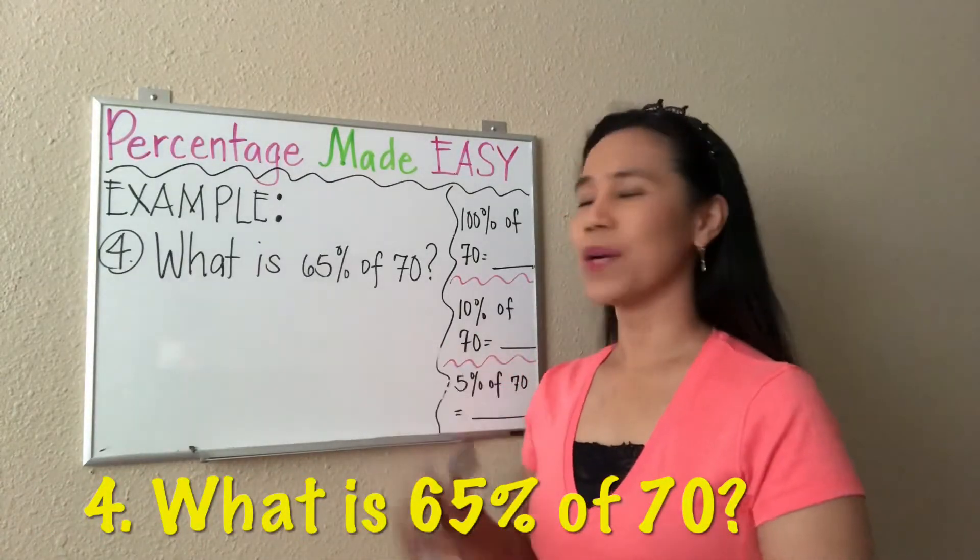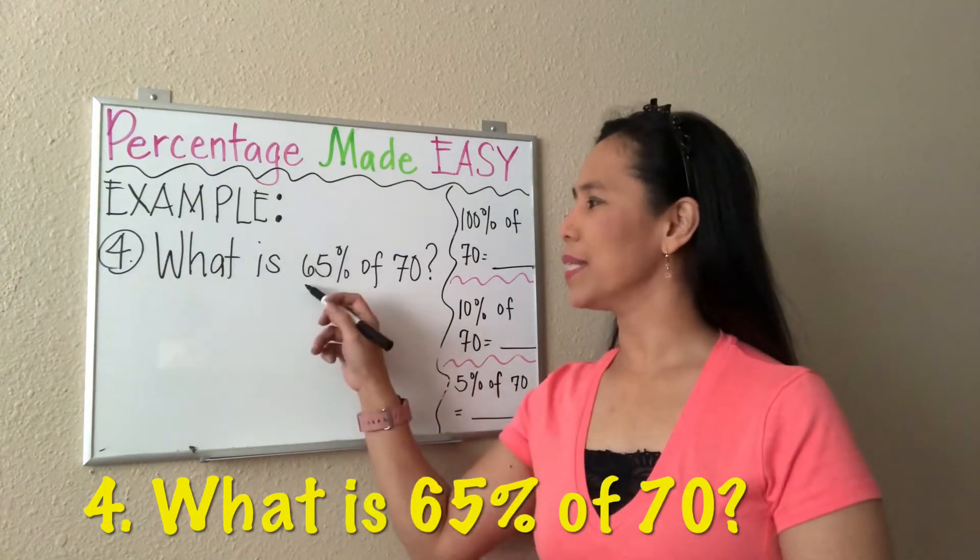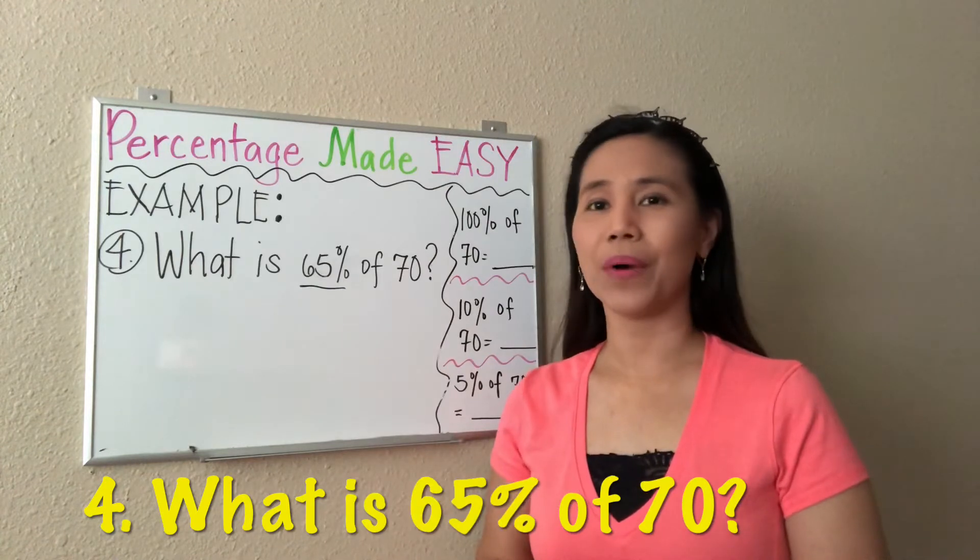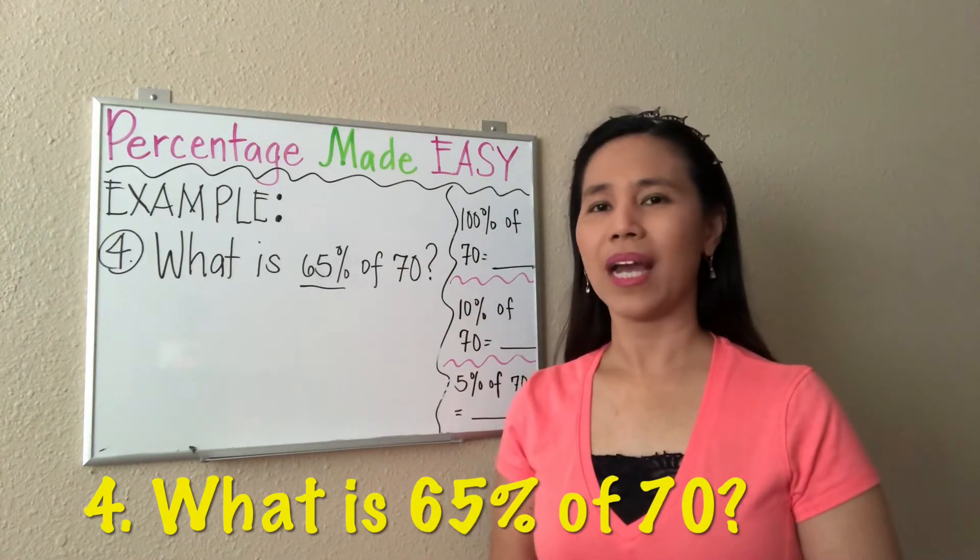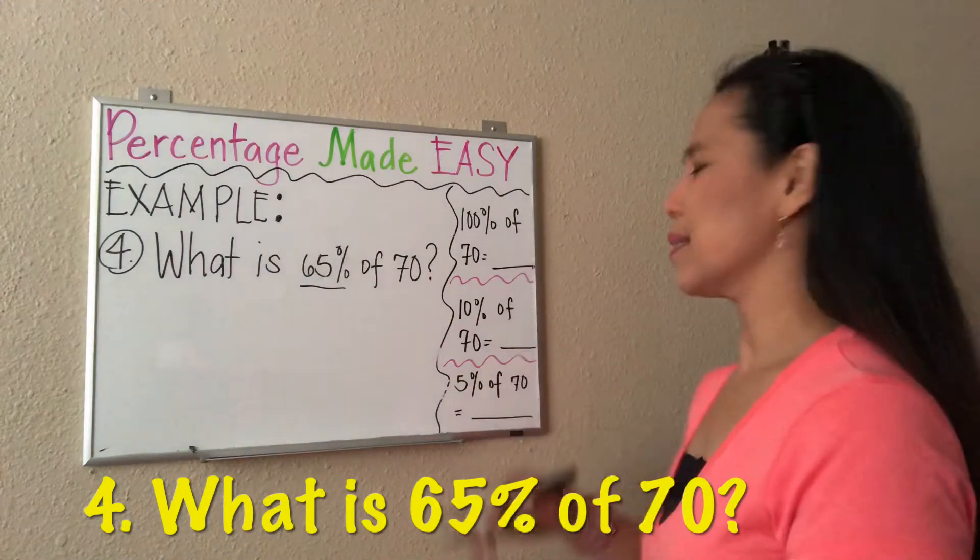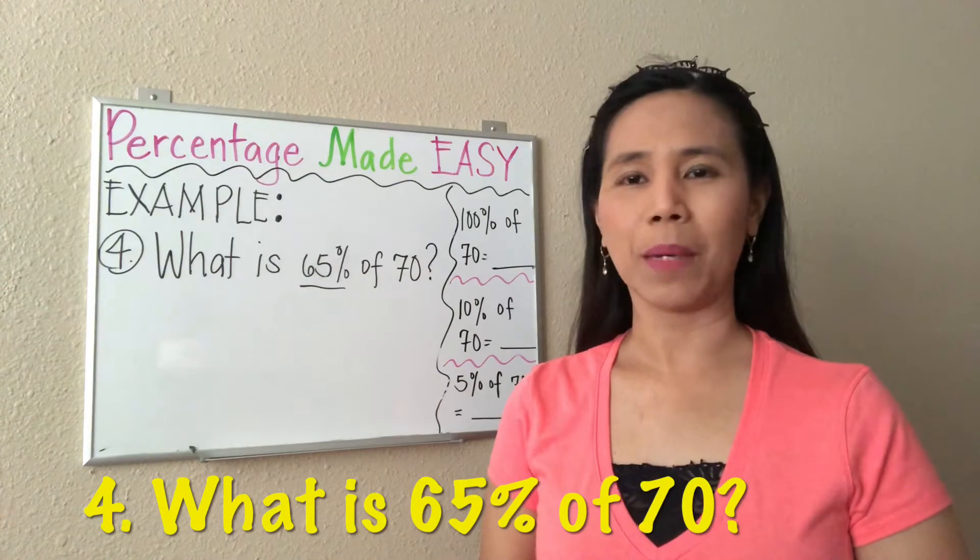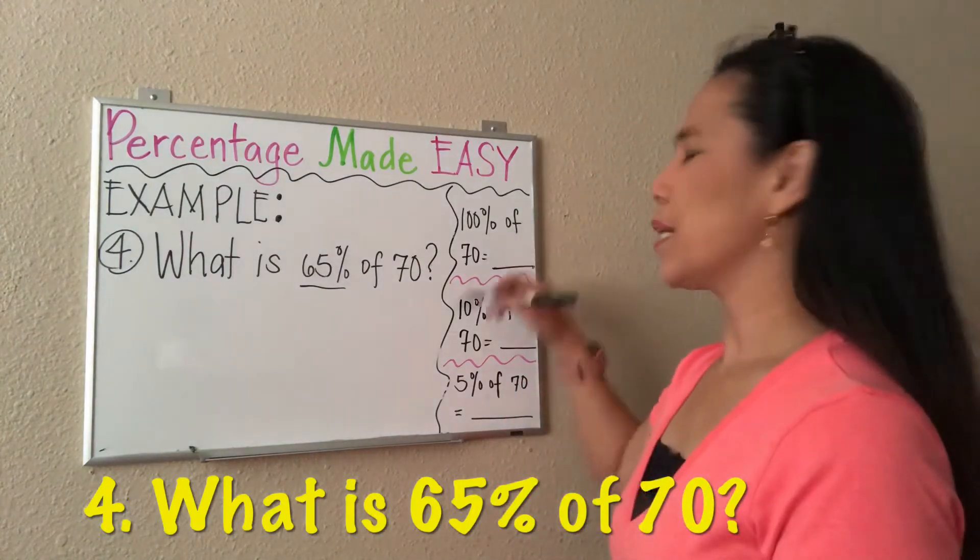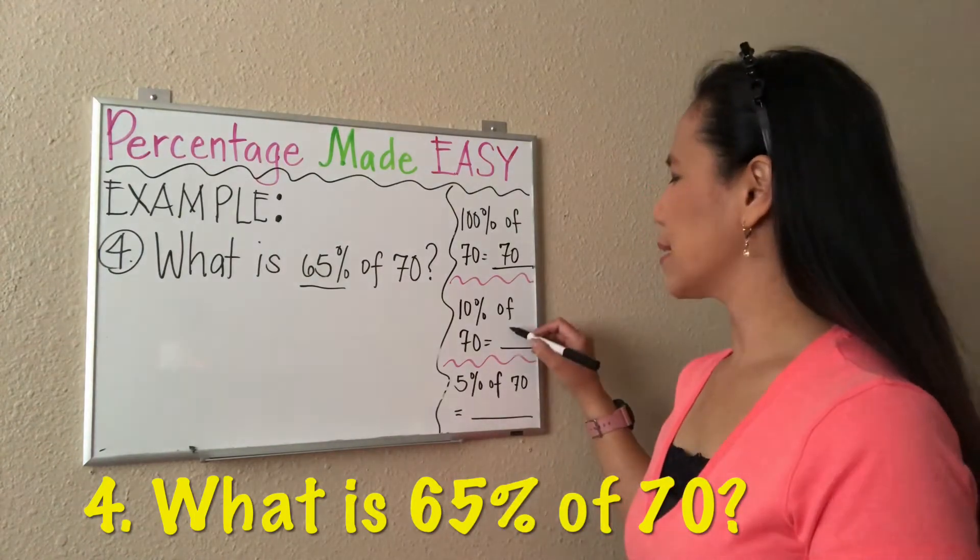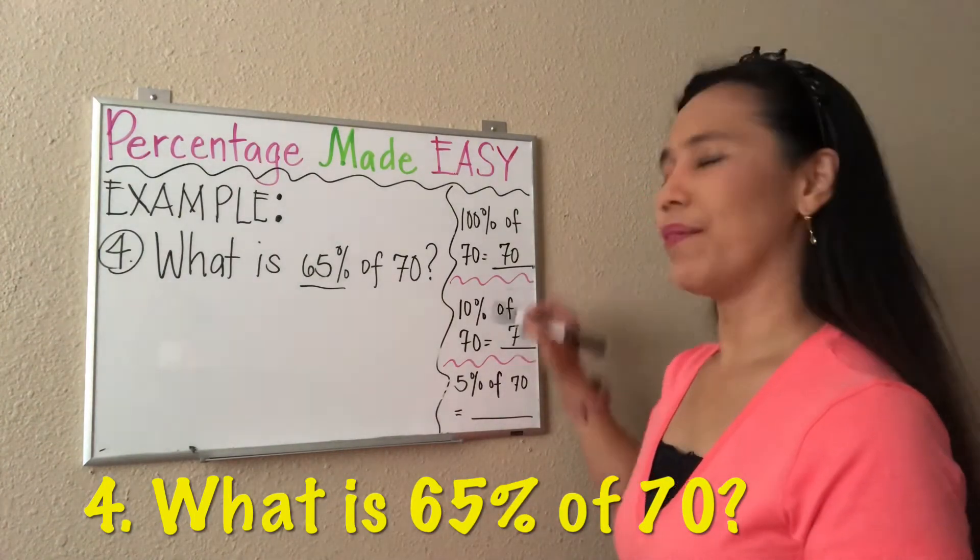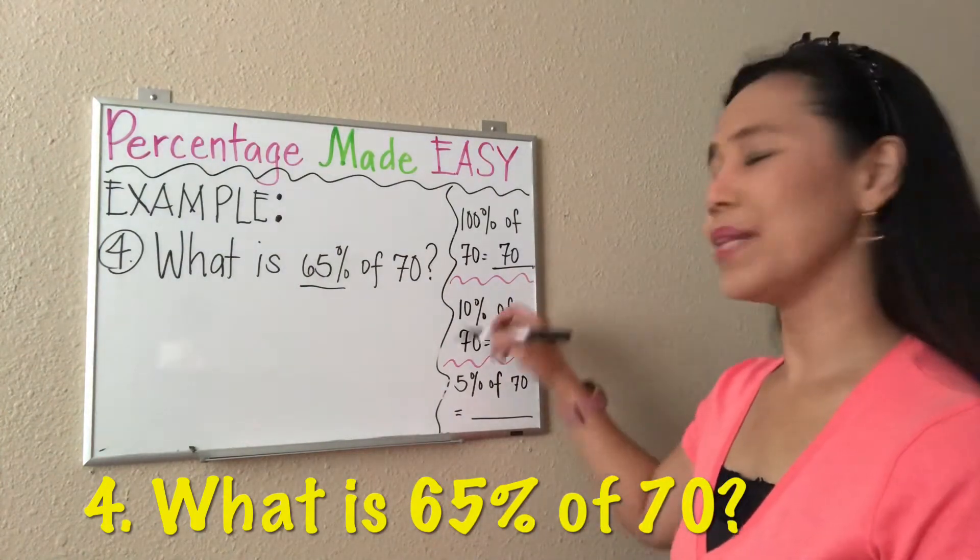Let's now have a more challenging problem: what is 65% of 70? Notice that one of the numbers doesn't have a zero anymore, so we cannot use the zero cancellation strategy. However, we can still use the strategy where we get 100% and 10% of the whole number. 100% of 70 is 70, and 10% of it is 7.